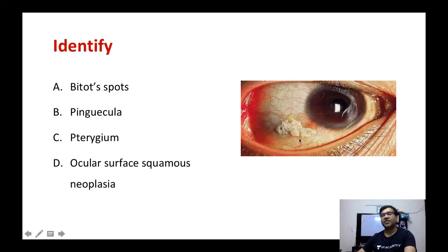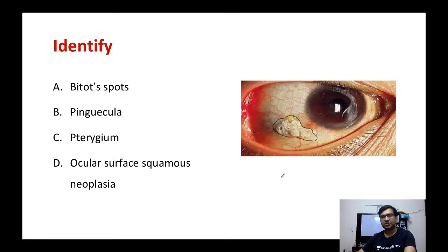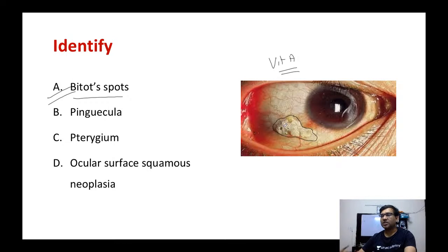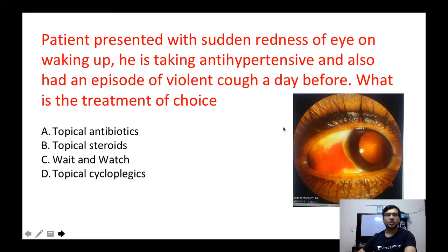Next question: a patient with vitamin A deficiency presents with foamy epithelial spots around the limbus. What is this condition? These foamy epithelial lesions around the conjunctiva are seen in vitamin A deficiency and are called Bitot spots. Remember, Bitot spots are not elevated lesions — they are flat, foamy-type lesions on the conjunctiva.